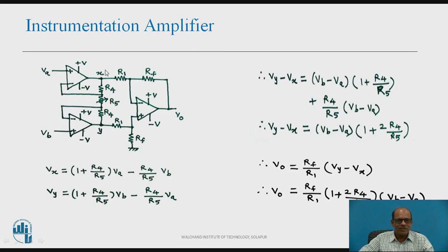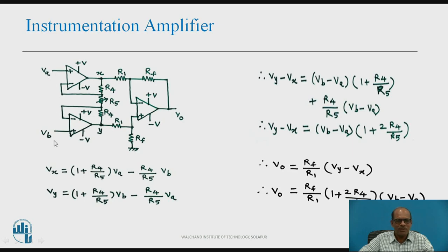This is the instrumentation amplifier. For this instrumentation amplifier, three op-amps are used as shown in the circuit. Resistances are R1, Rf, R1, Rf, R4, R5, and R4. Phi A and phi B are the outputs taken from the previous circuit — the transducer bridge.